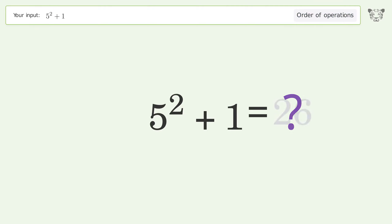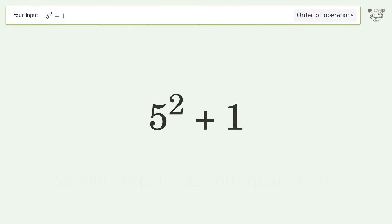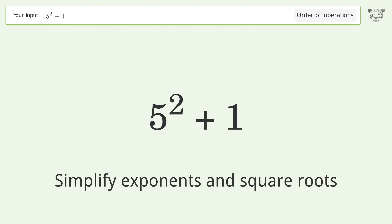You asked Tiger to calculate. This deals with the order of operations. The final result is 26. Let's solve it step by step.